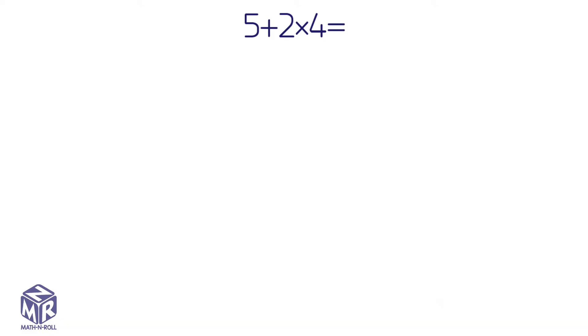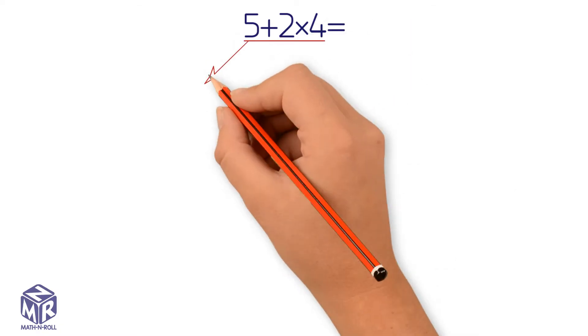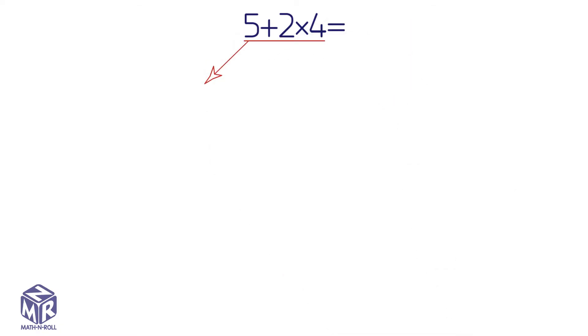We can solve this problem in two ways. Let's try the first method. We start with addition. 5 plus 2 equals 7. Then we multiply the 7 by 4 to get 28.